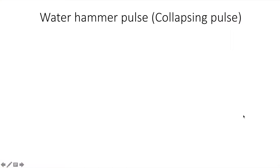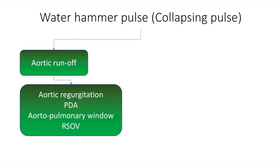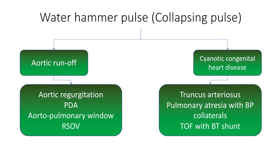The water hammer pulse in clinical practice is due to aortic runoff, most commonly because of aortic regurgitation, a patent ductus arteriosus, an aortopulmonary window, or the rupture of sinus of Valsalva. It can also be because of cyanotic congenital heart disease, and in this category we have truncus arteriosus, pulmonary atresia with bronchopulmonary collaterals, and tetralogy of Fallot with a Blalock-Taussig shunt.